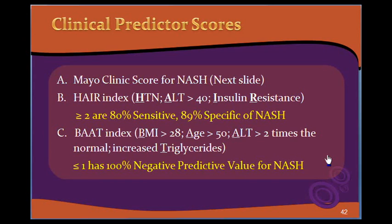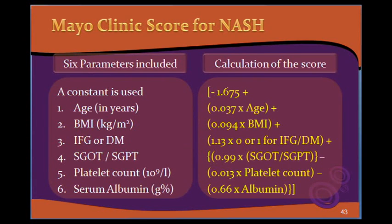If the patient has more than 1 of these factors, we proceed with investigation and evaluation for NASH. These are two simple indices based on common information obtainable from the patient, such as BMI, age, SGPT, and triglycerides. The Mayo Clinic score is more comprehensive, which we will see in the next slide.